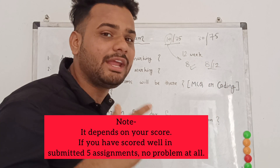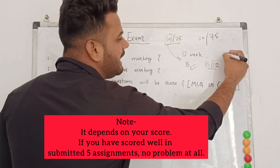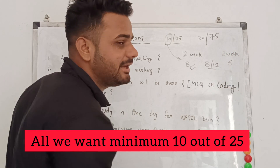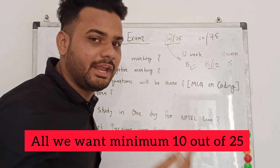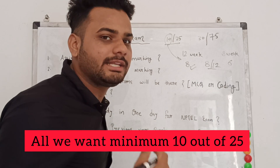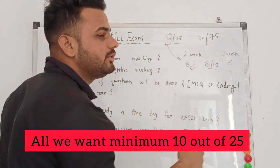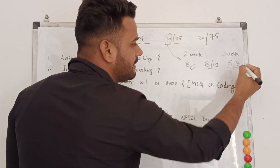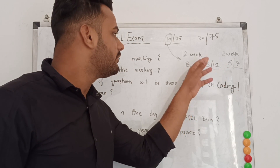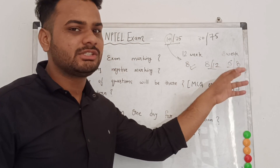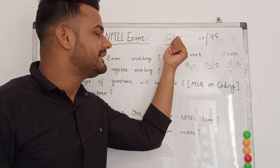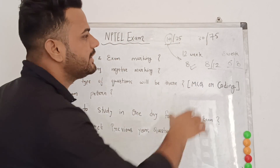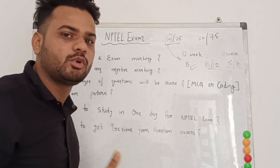Similarly, for an 8-week course, they will check the six best assignments out of eight. If those scores total more than 10, you pass the assignment portion. The main criteria is 10 out of 25 in assignments. For the main exam, you must go to the exam center and score a minimum of 30 out of 75.